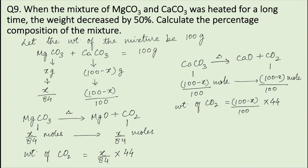The total decrease in weight on heating the mixture is 50%, and this decrease in weight is due to the evolution of carbon dioxide. So the amount of carbon dioxide formed equals 50% of the total weight of the mixture, which is (50/100) × 100 = 50 grams.